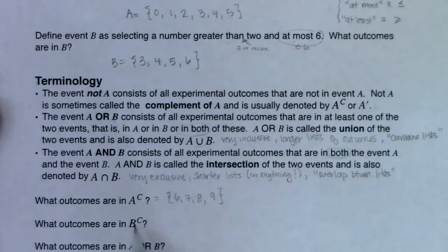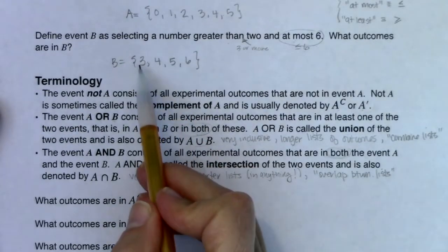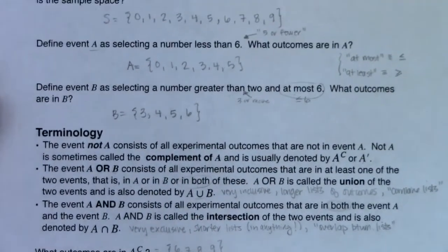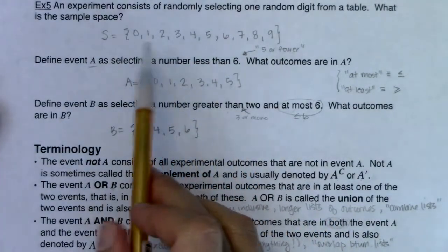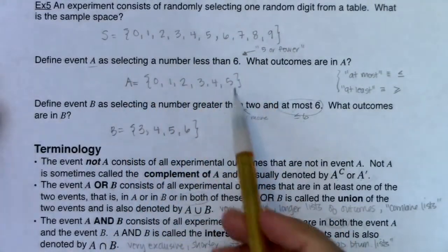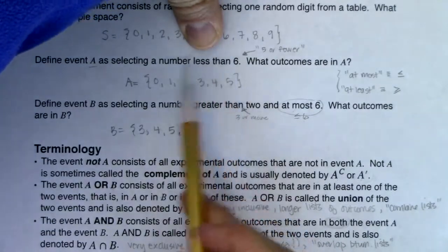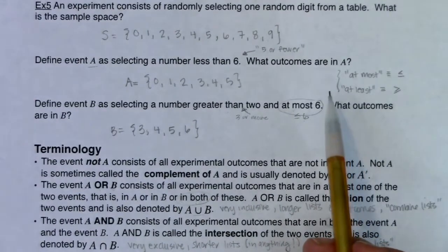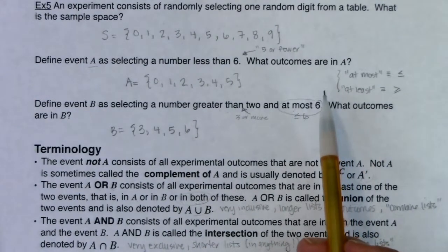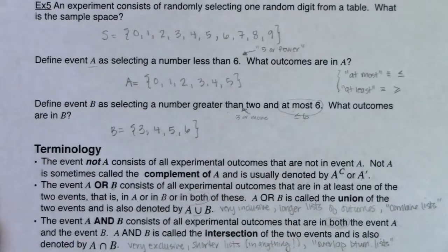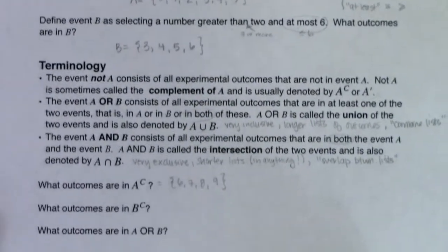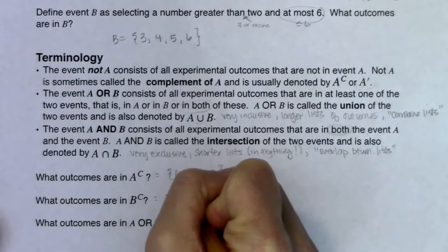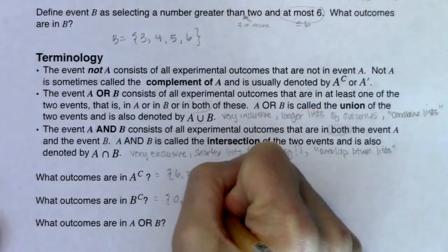By the same rationale, B had 3, 4, 5, 6. The sample space is 0 through 9, so what's missing from the sample space as we go to event B? Zero, one, two, seven, eight, and nine were not in B — meaning they are in B complement. B complement is the list of everything from your sample space that didn't make it into event B.